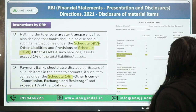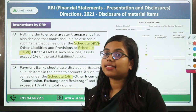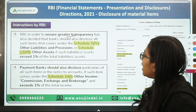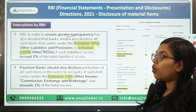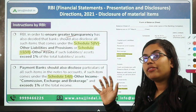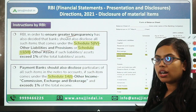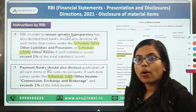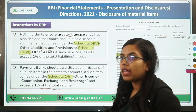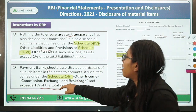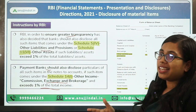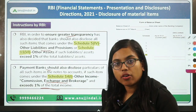Moving forward and talking about the balance sheet, in order to have greater transparency, RBI has instructed that any other liabilities and provisions, or any other assets whose value exceeds 1% of the total, should be disclosed in the notes to account. Similarly, for payments banks, they are required to disclose any income that exceeds 1% of the total income under Schedule 14 — other income, commission, exchange and brokerage — in the notes to account. This is the simple instruction that RBI has issued for commercial banks.